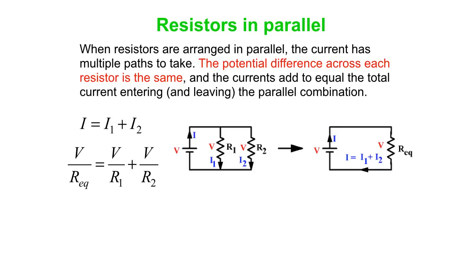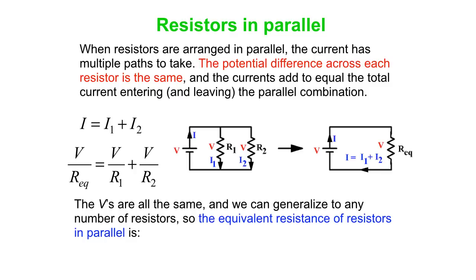Note that the potential differences across each resistor are equal to the battery voltage, because they're both directly tied to the positive terminal and both directly tied at the other end to the negative terminal. So the V's are all the same, so we can cancel out the V's and we just get one over R_EQ is one over R1 plus one over R2.